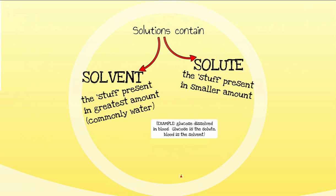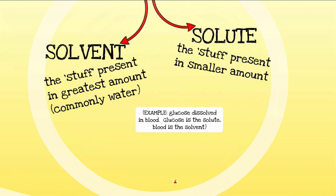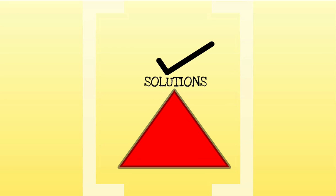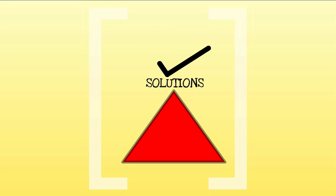Solutions typically contain a solvent and solute. The solvent is the stuff there in the greatest amount, and it's usually doing the dissolving of the other stuff. The solute is the thing being dissolved — typically the stuff there in smaller amounts. A good example would be glucose dissolved in blood: glucose is the solute and blood is the solvent. The solute particles are very tiny, they do not settle out, and they do not scatter light. Another good example is mineral water.